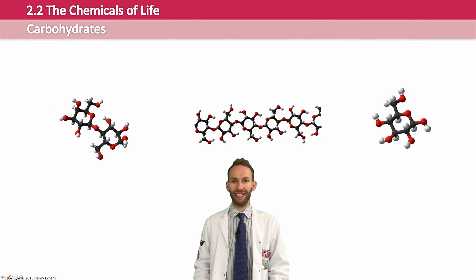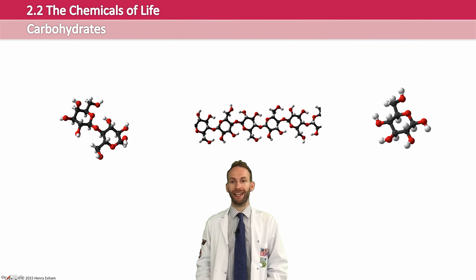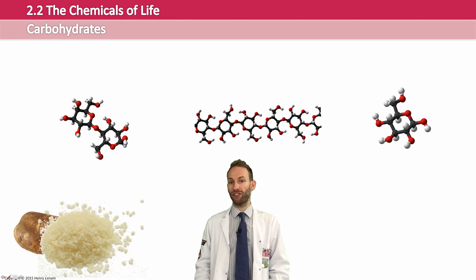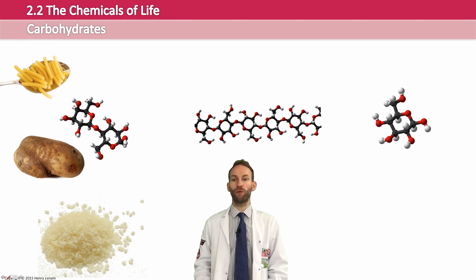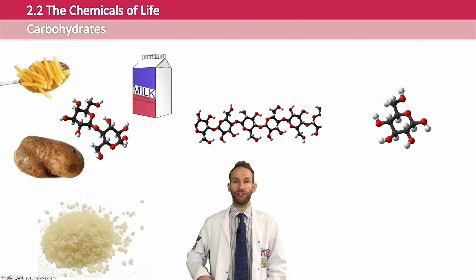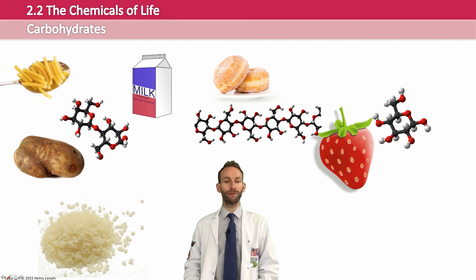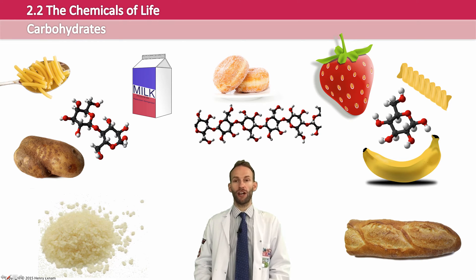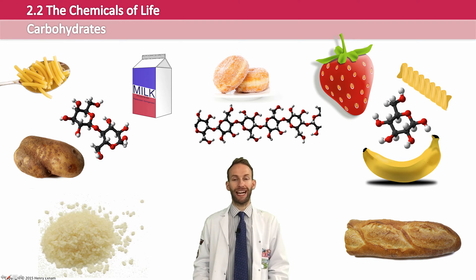Cells use carbohydrates as a source of energy and as a way of storing energy. The source of energy is usually small simple sugars like glucose. Plants can store this in the form of starch, while animals choose to store their glucose as something called glycogen.